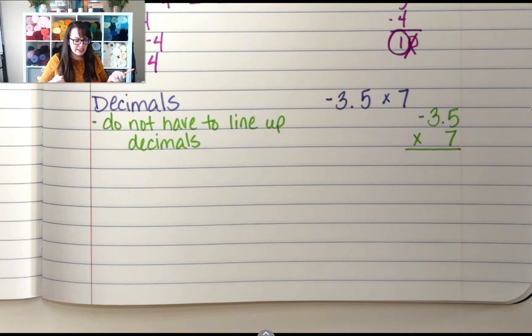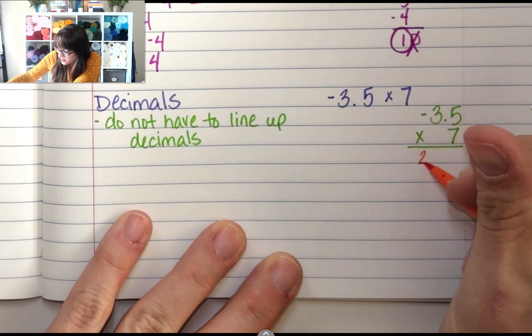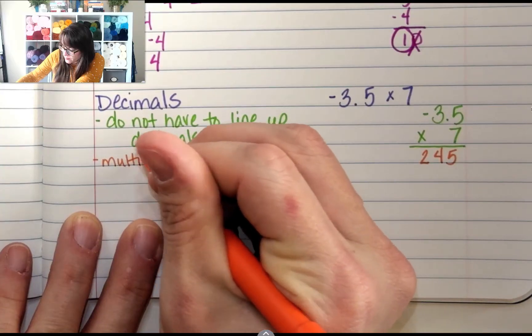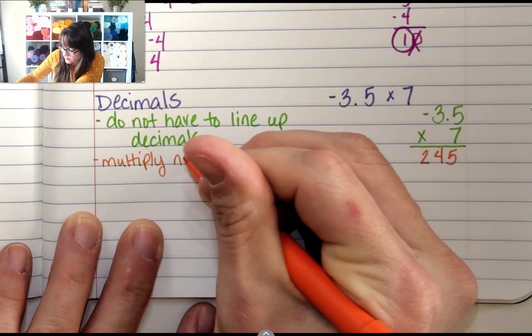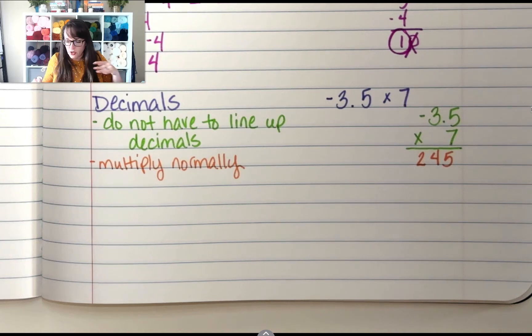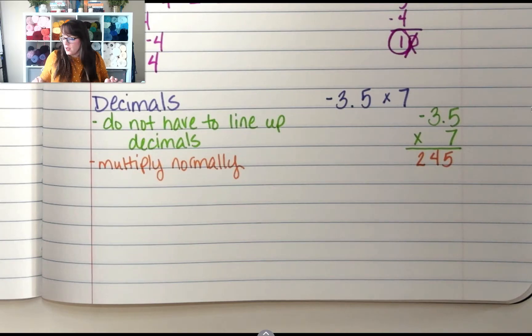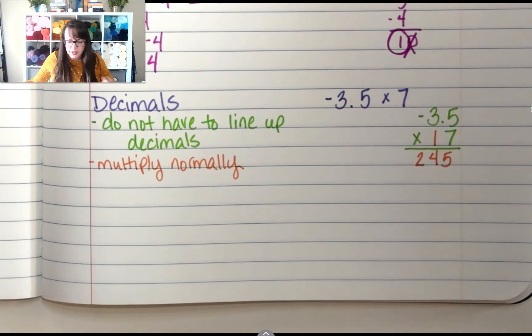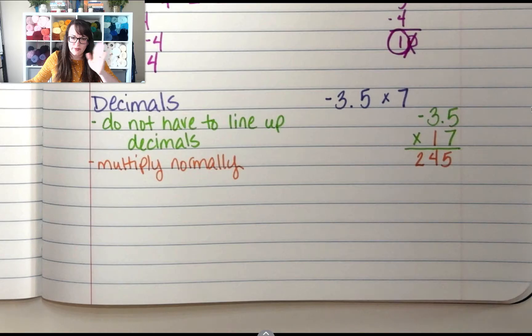245. So I'm going to multiply it like normal. Double digits. Don't forget to drop your placeholder 0 at the bottom. So, in fact, let's practice that, just because I'll let no people make mistakes. So if there was a 1 right there, let's just pretend that this is 3.5 times 17.